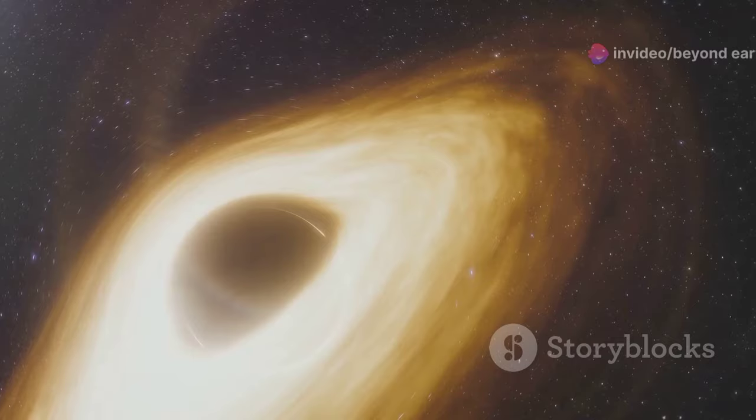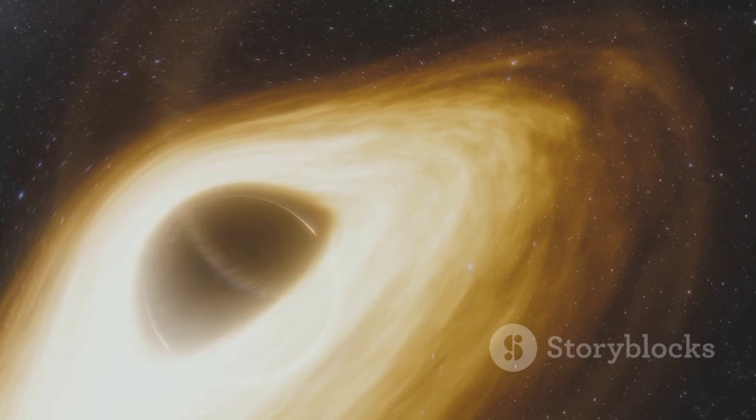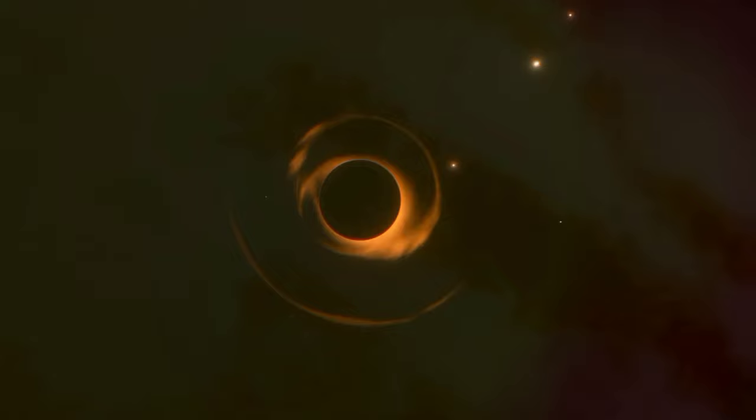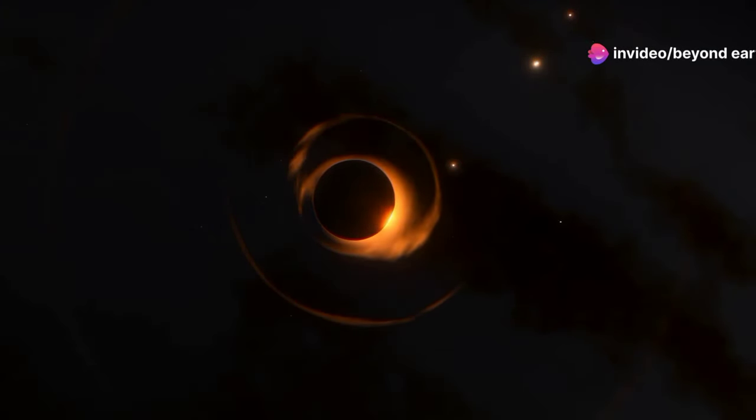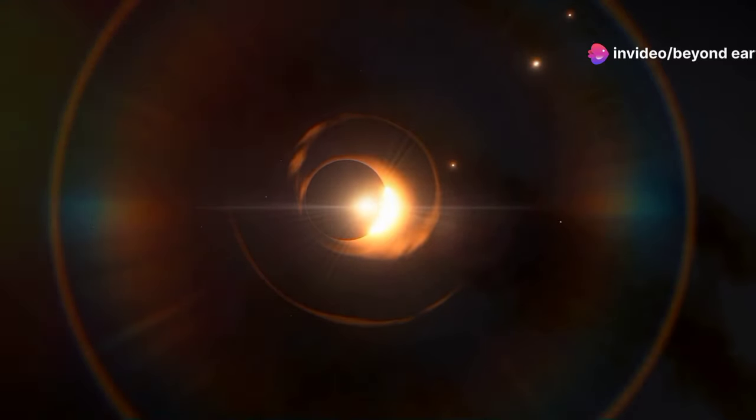But here's the kicker. If the sun somehow turned into a black hole with the same mass, the gravitational pull on Earth would stay exactly the same. Yep, we'd still be orbiting around it like usual. The orbits of the planets would remain unchanged because the mass of the black hole would be the same as the sun's.